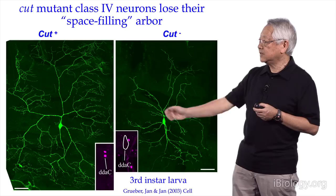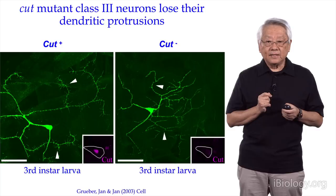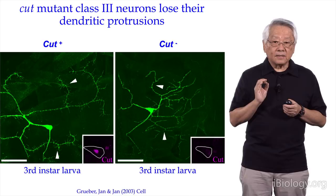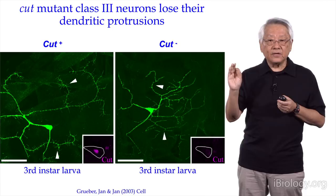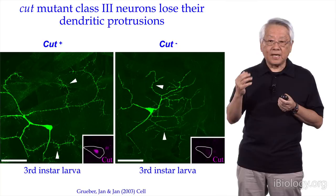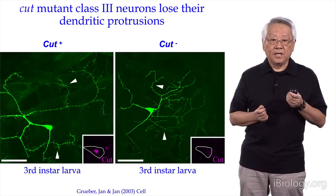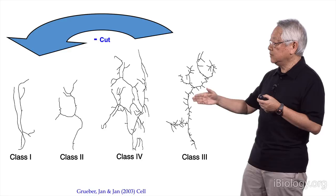Likewise, if he did the same experiment with class 3 neurons, removing CUT reduces the size of the dendrite arbor. Moreover, class 3 neurons have a unique structure — those short protrusions we call dendritic spikes, which are used for mechanotransduction. By removing CUT, this class 3-specific structure disappeared. So by reducing CUT, we see that it reduces the complexity of the dendrite, and those little class 3-specific spikes disappear.